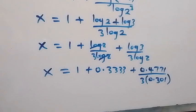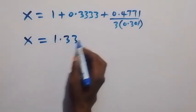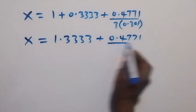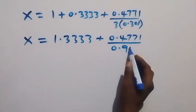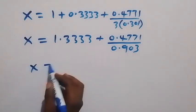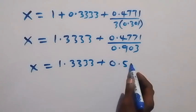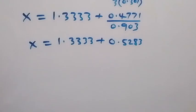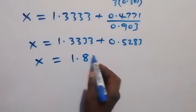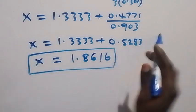When we simplify, x equals 1.3333 plus 0.4771 divided by 0.903. Dividing 0.4771 by 0.903 gives approximately 0.5283. Summing everything together, x equals 1.3333 plus 0.5283, which gives us x equals approximately 1.8616.